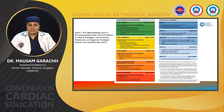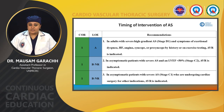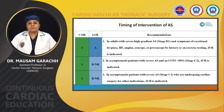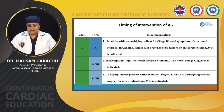Timing of intervention per AHA 2020 guidelines: Class 1A — in adults with severe high-grade aortic stenosis (stage D1) and symptoms of exertional dyspnea, heart failure, angina, syncope or presyncope by history or exercise testing, AVR is indicated. Class 1B NR — in asymptomatic patients with severe AS and LV-EF less than 50% (stage C2), AVR is indicated. Class 1B NR — in asymptomatic patients with severe AS (stage C1) undergoing cardiac surgery for another indication, AVR is indicated.